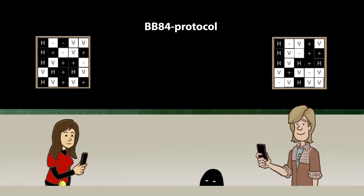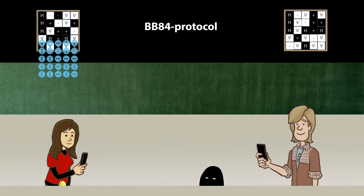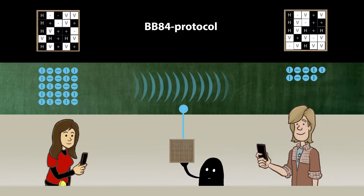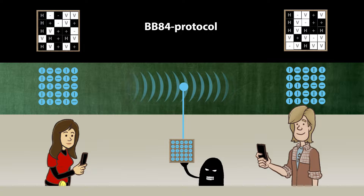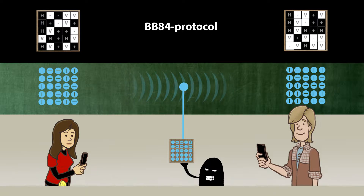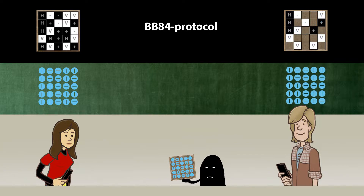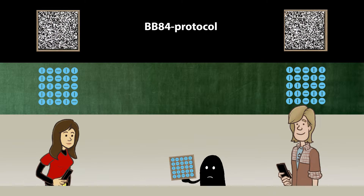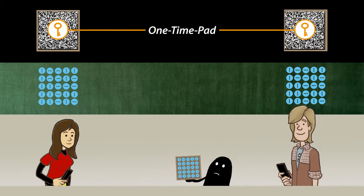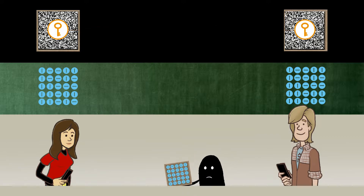In this way, Bob receives his measuring results. Which of them can be used as a one-time pad? This is where Alice can help. She now discloses only the respective measuring base, but not the polarization state of the photon. Next, Bob compares his respective base with that of Alice. Only the approximately 50% of cases where both have, by chance, taken the same basis give rise to identical data, which Bob can use as a key — that is, as a one-time pad.